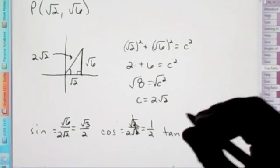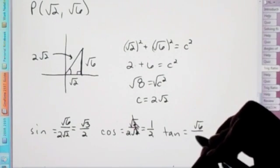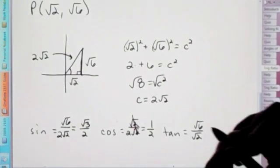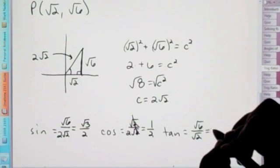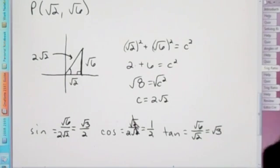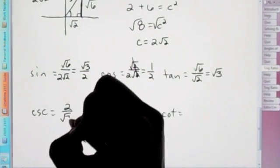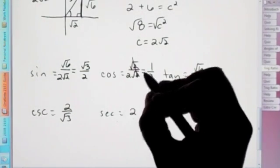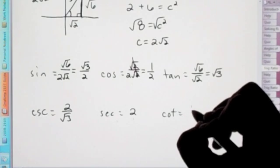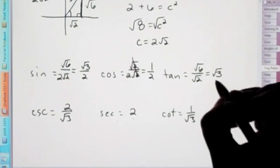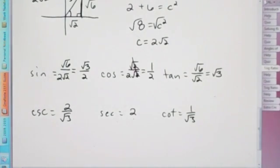Tangent is going to be root 6 opposite over adjacent, which again, root 6 divided by root 2 would be root 3. And from here, we just flip. So this would be 2 over root 3. 2 over 1, which is 2. And this becomes 1 over root 3, because that goes to the denominator.